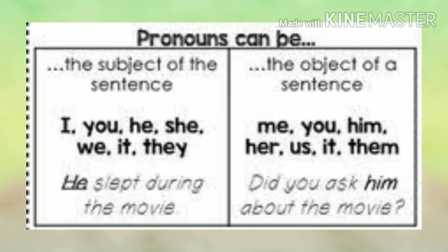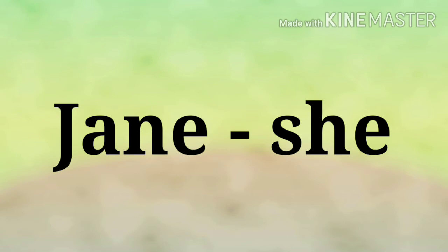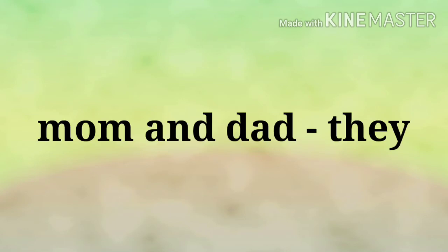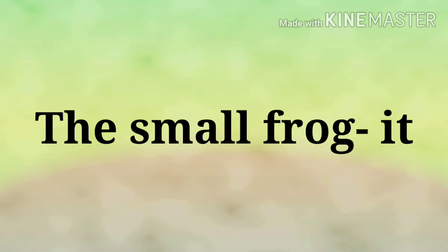Now you know how to use the personal pronouns. Let us now proceed to the next exercises. 'Sam and I' — what is the pronoun? Very good — the pronoun 'we.' Number two, 'Jane' — very good, the pronoun 'she.' Number three, 'mom and dad' — very good, the pronoun 'they.' Number four, 'Bob' — very good, the pronoun 'he.' Number five, 'the small frog' — very good, the pronoun 'it.'